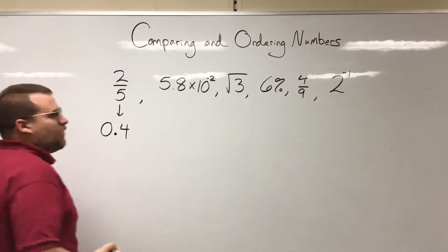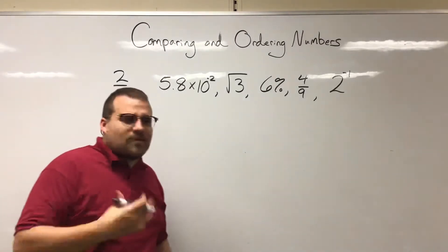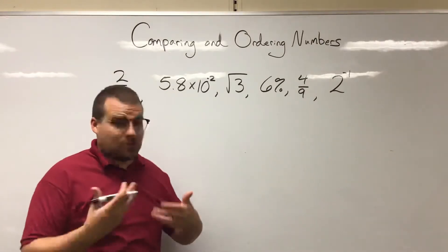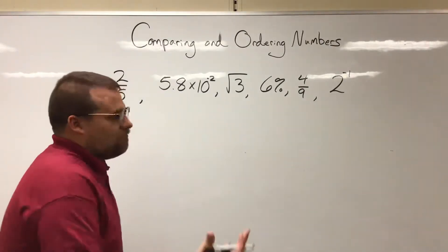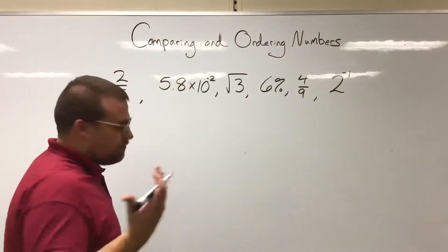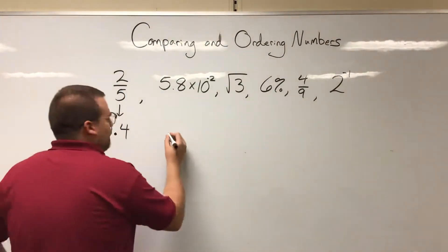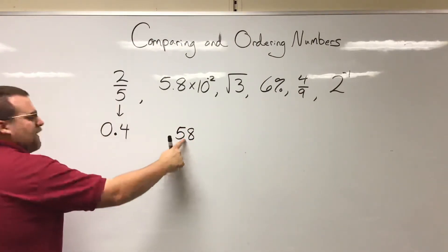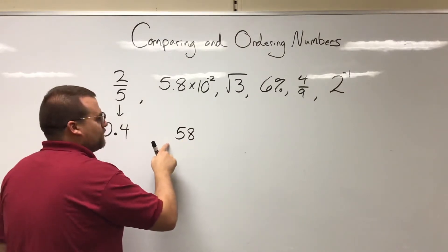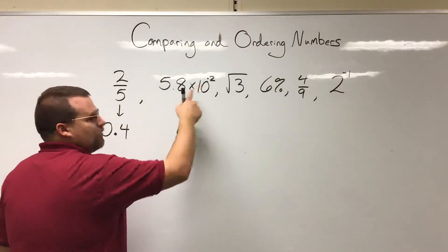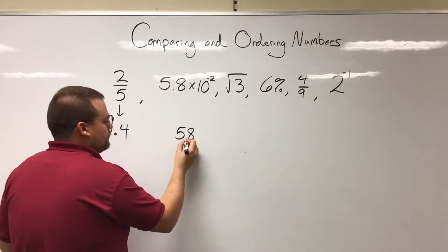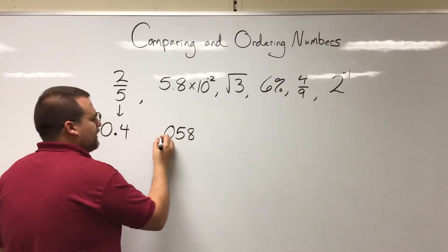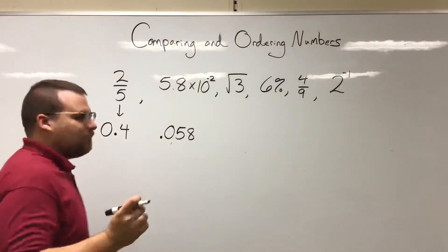Now my next number, 5.8 times 10 to the negative second. We can't exactly put scientific notation in the calculator quite as easy as we can just convert it ourselves. So I'm gonna write 5 and 8. I'm gonna think okay, my decimal was here and I need to move it two spots over to the left because it's negative. So 1 and 2. I'm gonna have one zero there and I'm gonna have a decimal here. 0.058. Alright, that one's done.